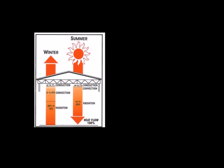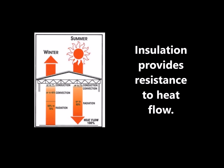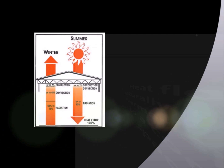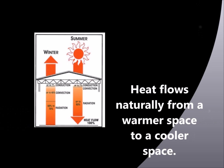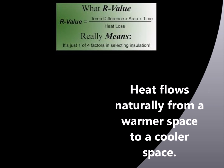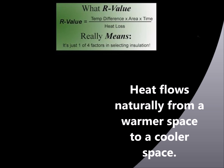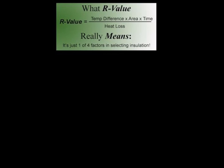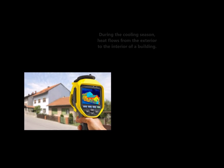So, how does insulation work? Insulation provides resistance to heat flow. The more heat flow resistance the insulation provides, the lower the heating and cooling costs. Heat flows naturally from a warmer space to a cooler space — remember this one for test purposes. In the cold winter, this heat flows directly from all heated living spaces to adjacent unheated spaces such as attics, garages, basements, underfloor crawl spaces, and even to the outdoors. Heat flow can also move indirectly through the interior ceilings, walls, and floors, wherever there is a difference in temperature.